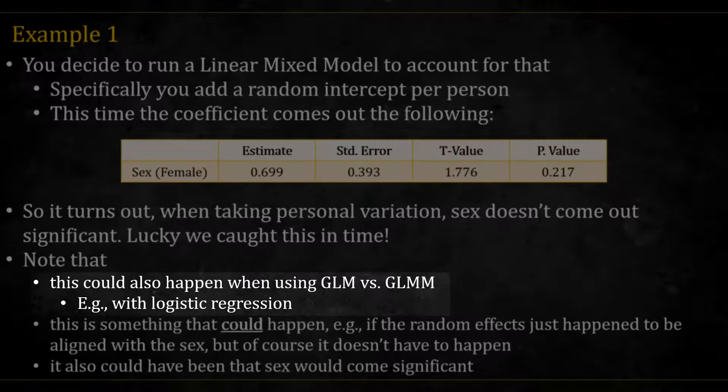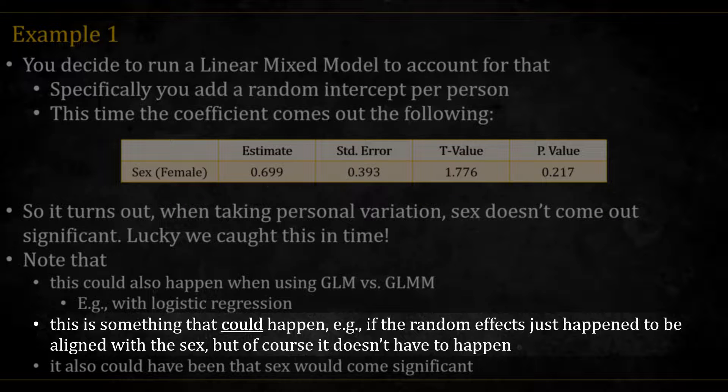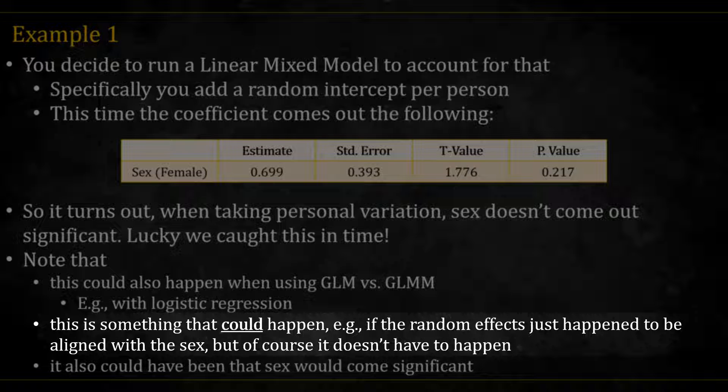A few things to note here. First, this example could also be adjusted to generalized models, that is, GLM versus GLMM. Second, this is something that could happen, but it doesn't have to happen. Here, the way I coded it was that sex doesn't affect the score,